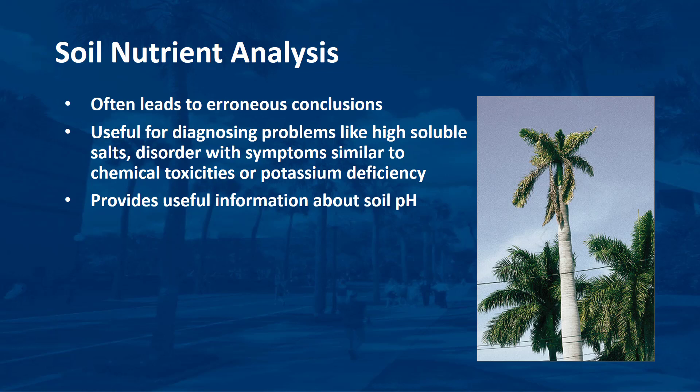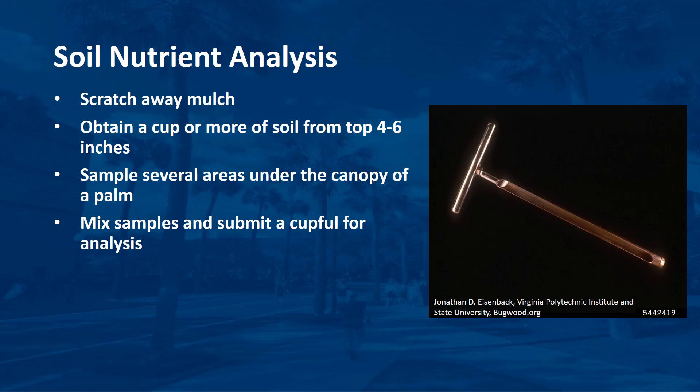For example, manganese availability in the soil is soil pH dependent. When collecting soil samples for laboratory analysis, it is best to scratch away the mulch or other surface covering and obtain a cup or more of soil from the top 4 to 6 inches of the soil profile. Sample several areas under the canopy of a single palm, or from under the canopies of several palms if they are all affected by a single problem. These samples should be thoroughly mixed and about one cupful of the mixture taken to a soil laboratory for analysis.